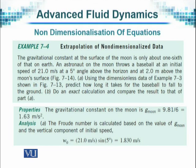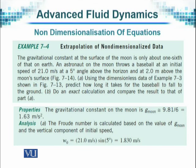Do an exact calculation and compare the result to that of part A. One is just a guesswork and the other one is to calculate exactly and make the comparison. The new thing being involved here is using non-dimensionalized data and looking at the convenience that it provides to the researchers. We observe that the gravitational constant on the moon is 9.81 divided by 6.